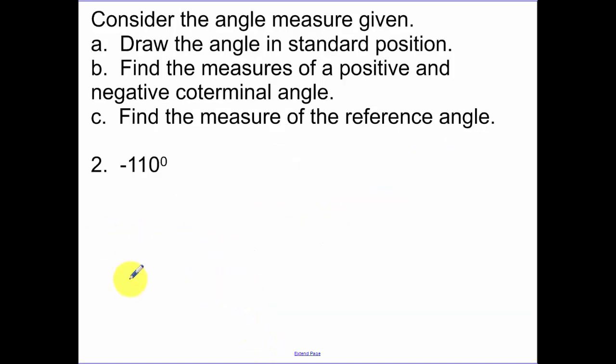So for our next one, same thing, just done with negative 110. Okay, so when I rotate negative, I rotate down clockwise. That's negative 110 degrees. This would have been negative 180. So draw the angle in standard position. Okay, that's what I just did. I showed how I rotated with my arrow and I labeled.